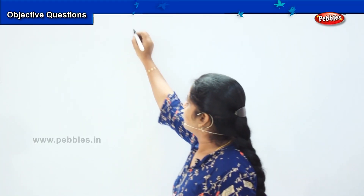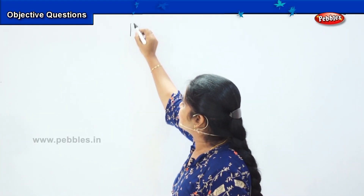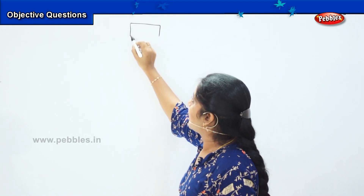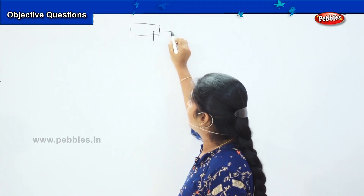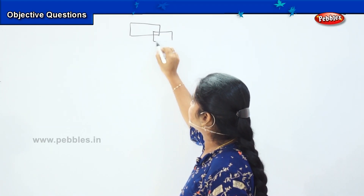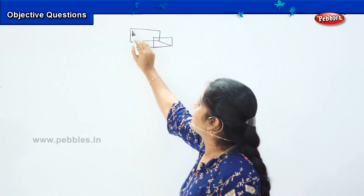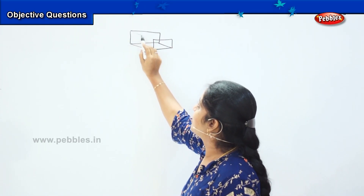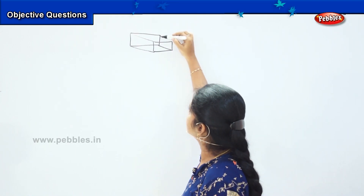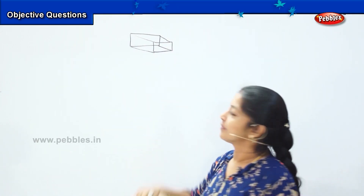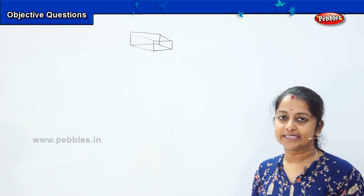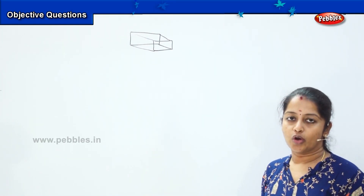Question number 11: see the picture which I am drawing here and you need to identify what this picture is all about. Before that, tell me — is it a 2D or a 3D picture? Yes, you are correct, it's a cuboid and it's a 3D picture. So, in a cuboid, how many faces are there?